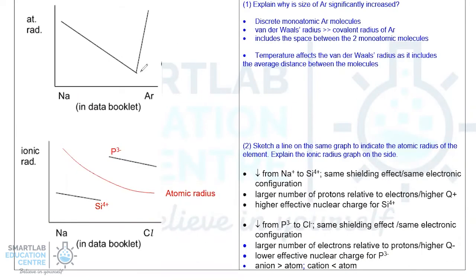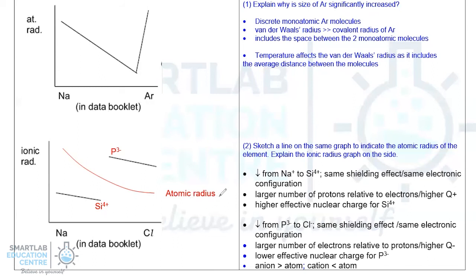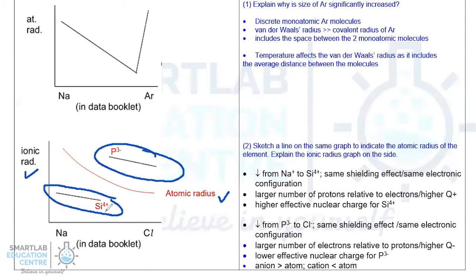A note on atomic radius based on data booklet values: for argon, the atomic radius appears much higher because it is the Van der Waals radius — the distance between two nuclei divided by two, meaning there is empty space between them. It is not possible to solidify argon, so the electron cloud size cannot be directly determined. The data booklet only provides the cationic radius of Si⁴⁺; however, silicon can also form Si⁴⁻ since it is a semiconductor. A sketch of atomic radius across Period 3, with ionic radius overlaid, produces a characteristic graph.